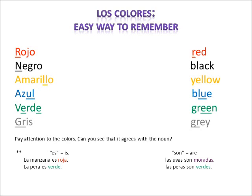Amarillo — what color in English do you know that has two L's? Yellow. Amarillo — yellow. Azul — what color in English do you know that has the letter U and the letter L? Blue. Azul — blue.